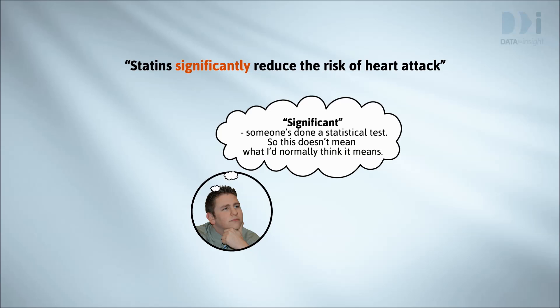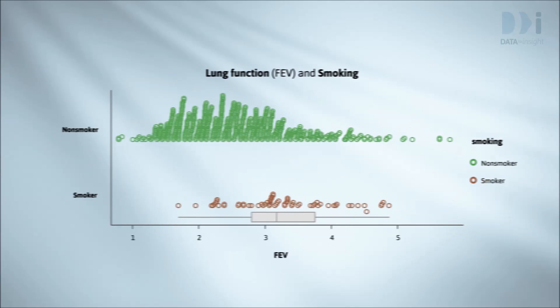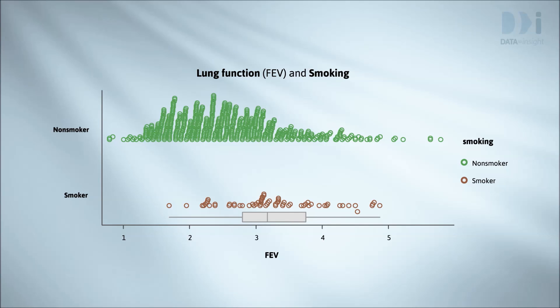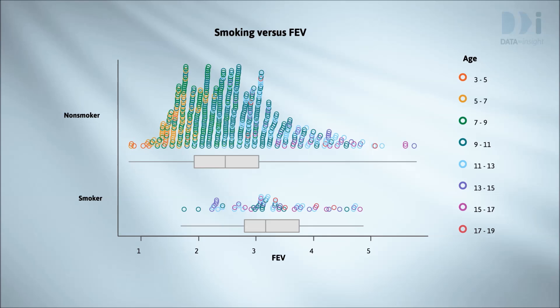We'll also pay attention to language and alert you to situations in which the words you read probably won't mean what you think they mean. Let's go back to our example in week 5 where we compared the lung functions of smoking and non-smoking children. It became clear this wasn't a fair comparison to tell us about the effect of smoking on lung function because the non-smoking group contained large numbers of young children while the smoking group was comprised mainly of teenagers.